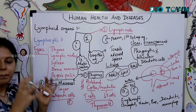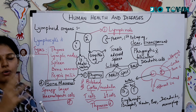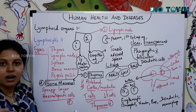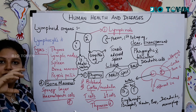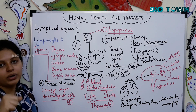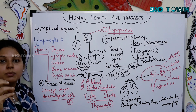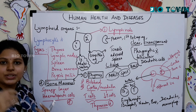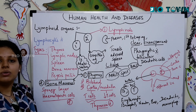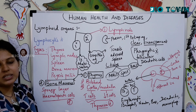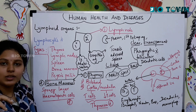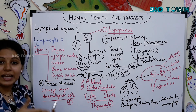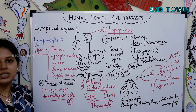Humans have 206 bones, all with a similar structure — only the shape varies. Each bone has an outer hard covering and an inner soft spongy covering. The spongy inner region is called the marrow, and it contains hematopoietic stem cells — cells that have the capacity to grow into any kind of cell. These hematopoietic stem cells produce lymphocytes, and this process begins right from conception.